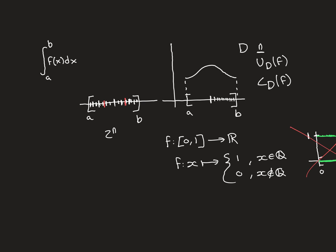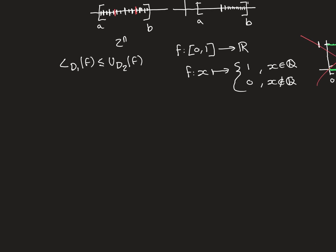We saw at the end of the previous part that no matter what two dissections you take, any lower Riemann sum will always be less than or equal to any upper Riemann sum, no matter what D1 and D2 are. We talked about creating these huge sets: the set of all lower Riemann sum values — all possible lower Riemann sums over all possible dissections — and the set of all possible upper Riemann sums. Every single value in the upper set is greater than or equal to every single value in the lower set.